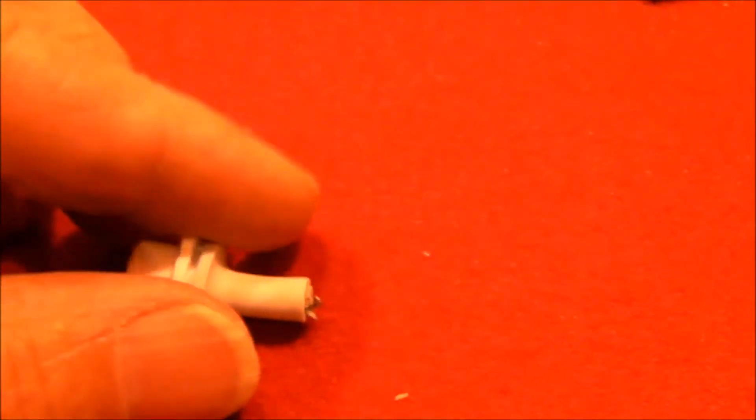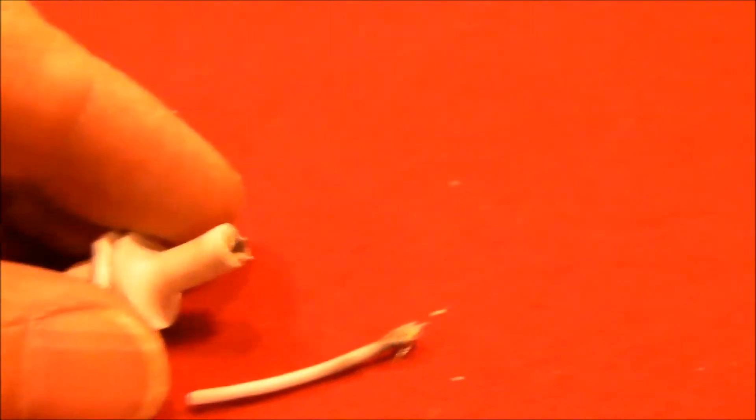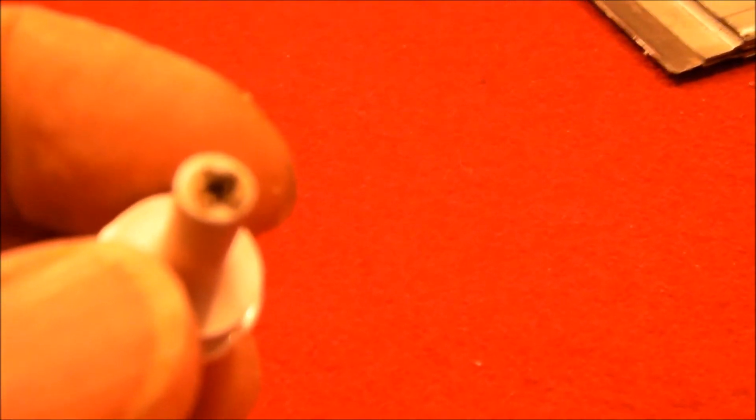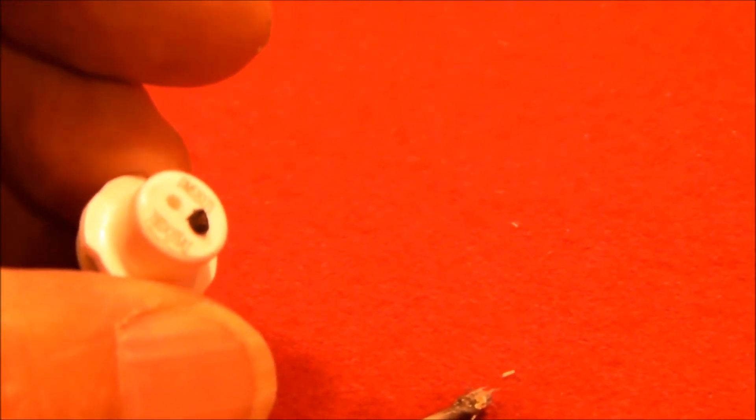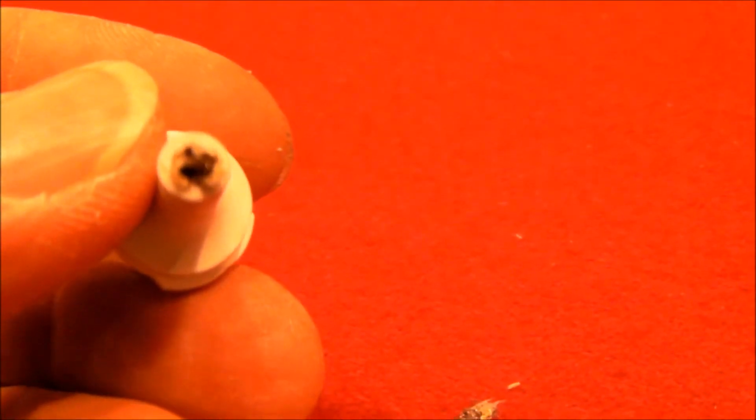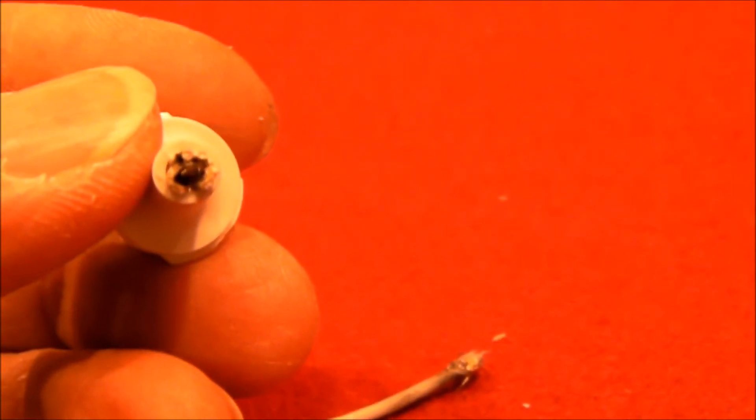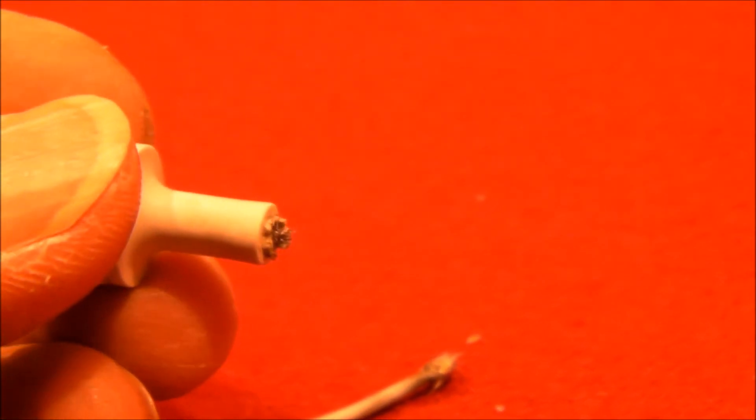The next thing I did was to just pull the wire out. I pulled the center conductor out, there it is right there. And you can see that the shield, or the black conductor, is still in there. So I'm going to pull that out next with just a pair of needle nose pliers.